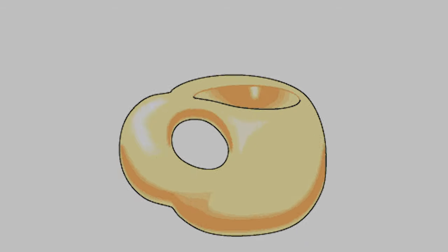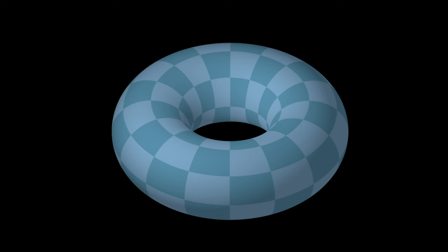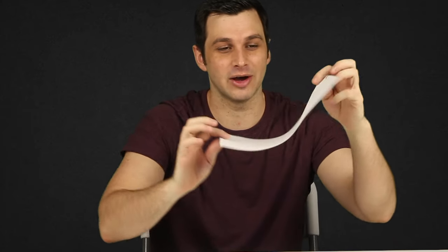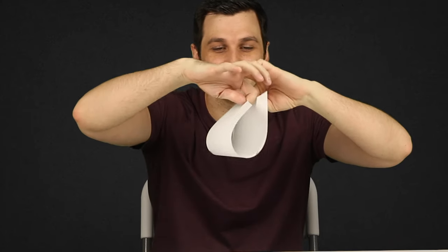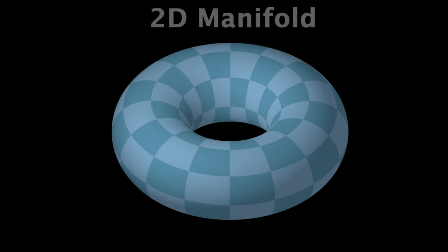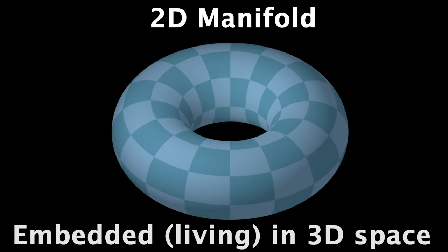Just note: when we're discussing a torus, we're only referring to the surface. Because we can only play the game on a flat 2D surface, and the connections we do don't change that. We're still only on the surface itself — there's no inside. So this remains a 2D manifold. It's just a surface, but it is embedded in 3D space.